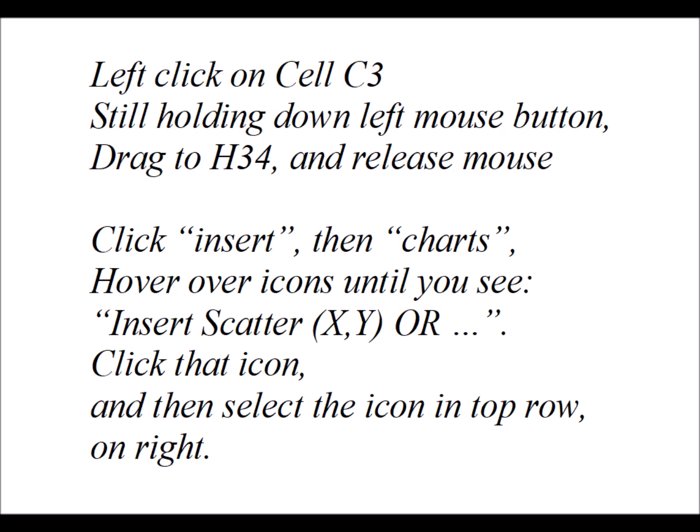And then to generate the Excel graph, we're going to left click on cell C3. We're going to hold down the left mouse button and then drag all the way to H34. And then we're going to release the mouse. We go up to the top, we click Insert, and then Charts. We hover over the icons until we see the Insert Scatter XY, and we're going to click on that icon. And then we select the icon in the top row on the right. That gives us the curve without seeing individual data points.